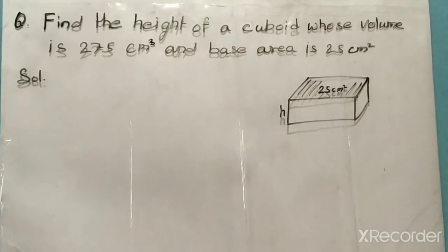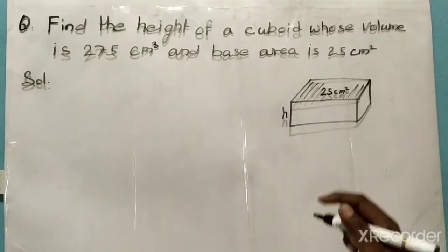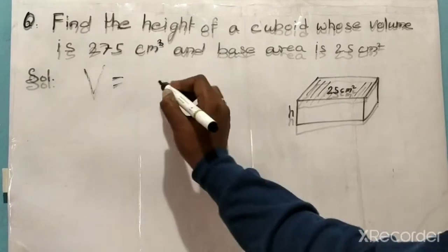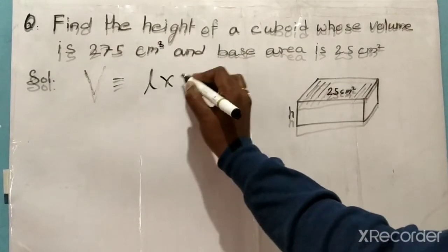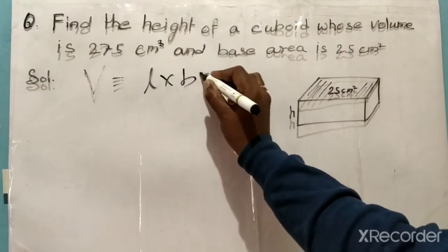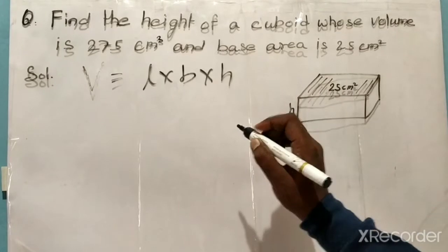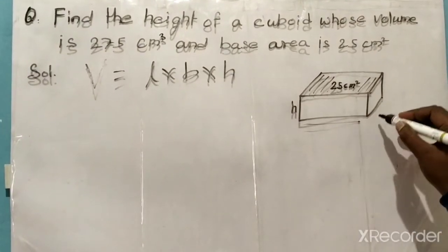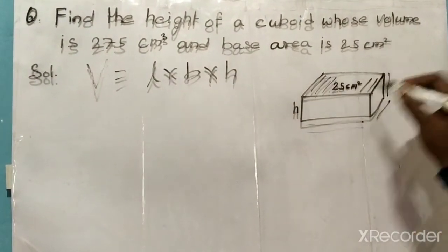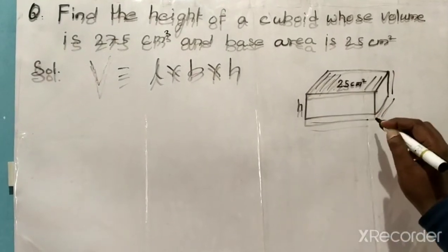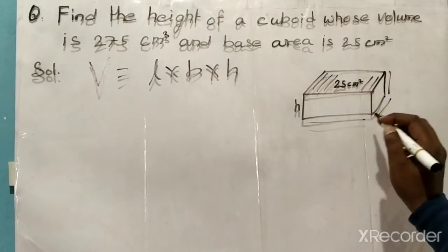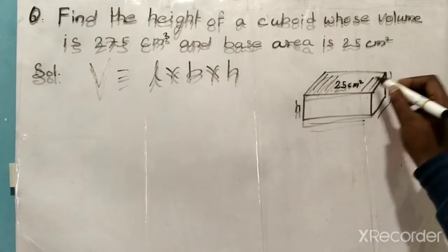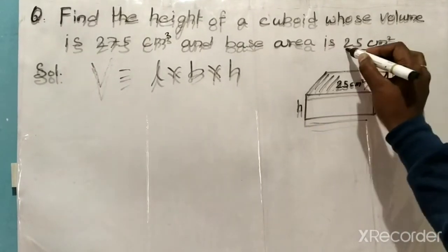We know the formula to find the volume of a cuboid: volume is equal to length into breadth into height. This is the length, this is the breadth, and this is the height. Length into breadth is equal to the base area. This area is given as 25 centimeter square.